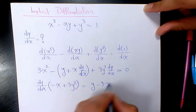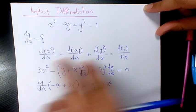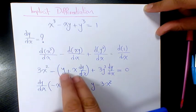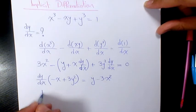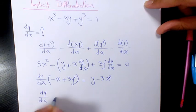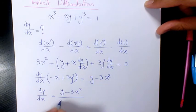y minus 3x². When I move these two to the other side it becomes: this one becomes positive, this one becomes negative. So dy/dx will be (y - 3x²) / (3y² - x).